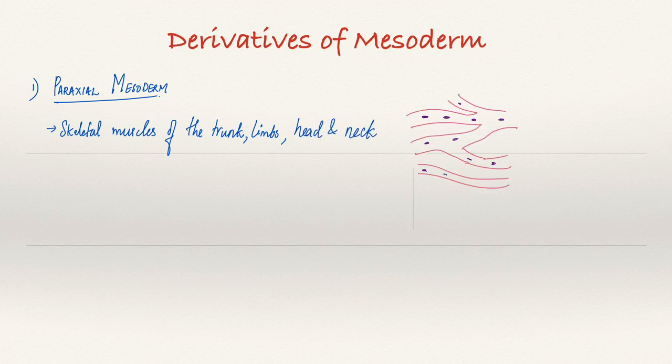It also forms the extraocular muscles of our eye, which includes the superior rectus, inferior rectus, medial rectus, lateral rectus, the superior oblique and the inferior oblique.